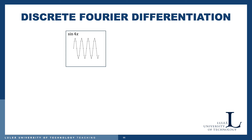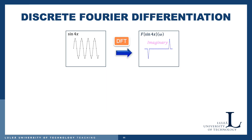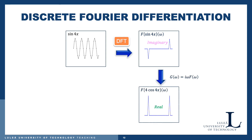As an example, consider the function sin(4x). With very few discrete nodes — specifically eight nodes per wavelength — to represent this function, we carry out the DFT and obtain the imaginary part of the Fourier transformation. We then define G(ω) = iω · F(ω), where G(ω) is the Fourier transformation of the derivative of f. The derivative of sin(4x) is simply 4cos(4x).